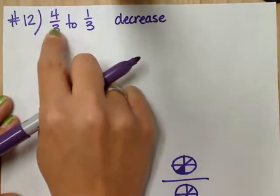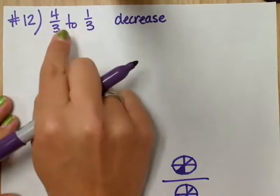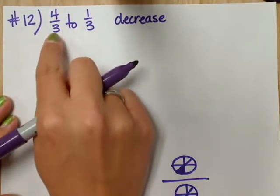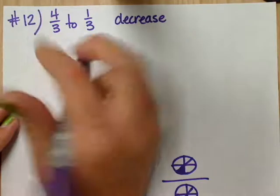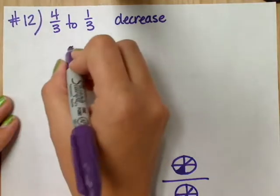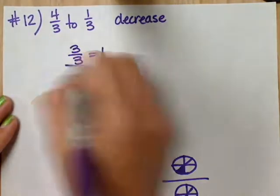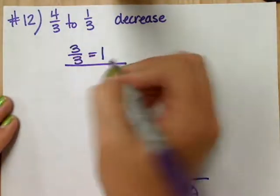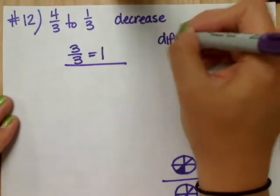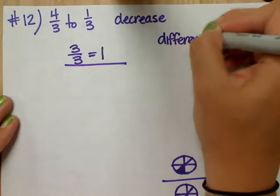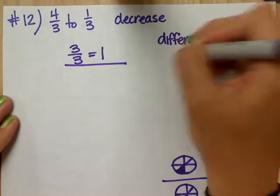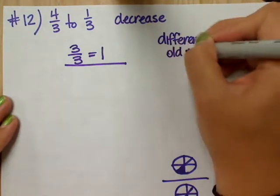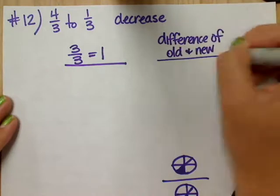Let's see, the difference between four-thirds and one-third would be what? Three-thirds. Is there another way to write three-thirds? Good, so that is equal to 1. 1 is my top number because, remember, it's the difference of old and new or original and new.